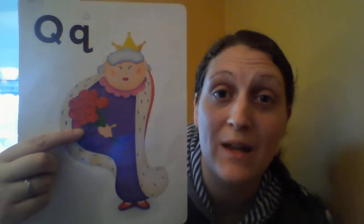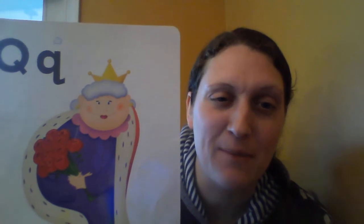Our alpha friend is Queenie the Queen. Queen starts with Q. Our motion for the letter Q is to pretend like we're being very quiet. So put your pointer finger in front of your lips and say, quiet, quiet, quiet.